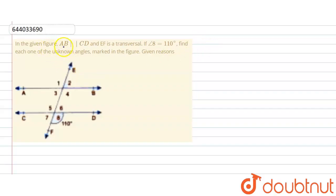So the question says: in the given figure, AB is parallel to CD and EF is a transversal. If angle 8 is equal to 110 degrees, find each one of the unknown angles.